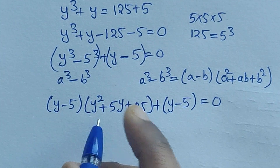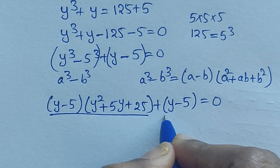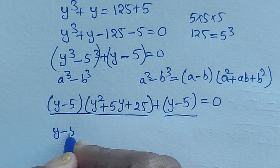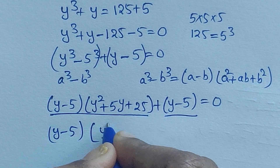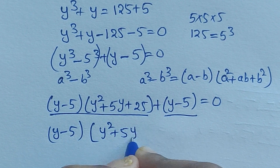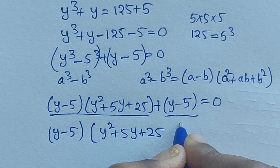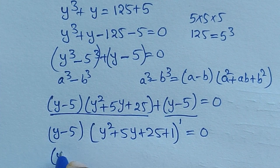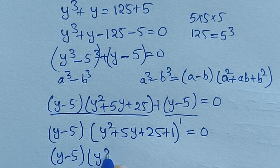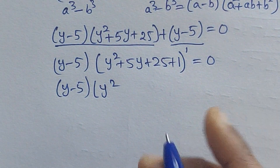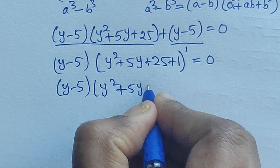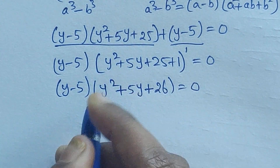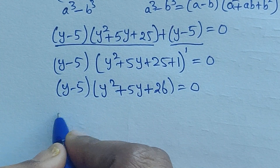Since b equals 5, b squared is 25. We also have the remaining term y minus 5 equals 0. In these two terms, y minus 5 is common, so taking it out: y minus 5 times the quantity y squared plus 5y plus 25 plus 1, equals y minus 5 times y squared plus 5y plus 26 equals 0.